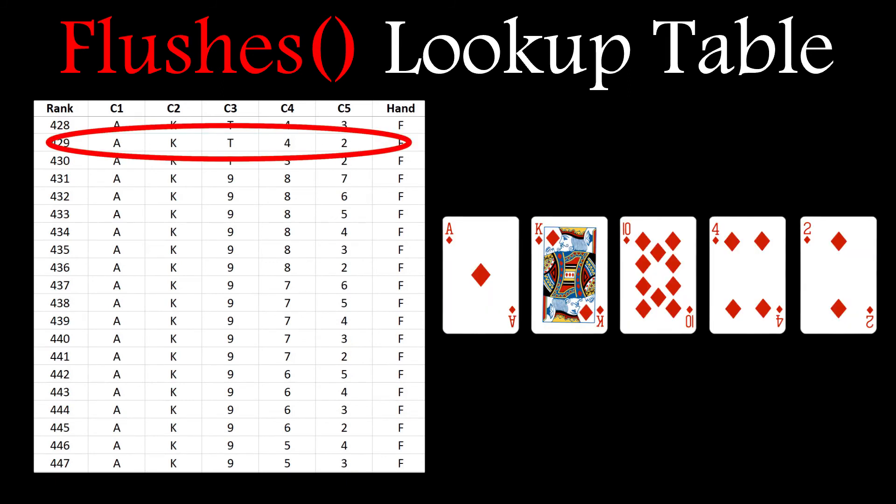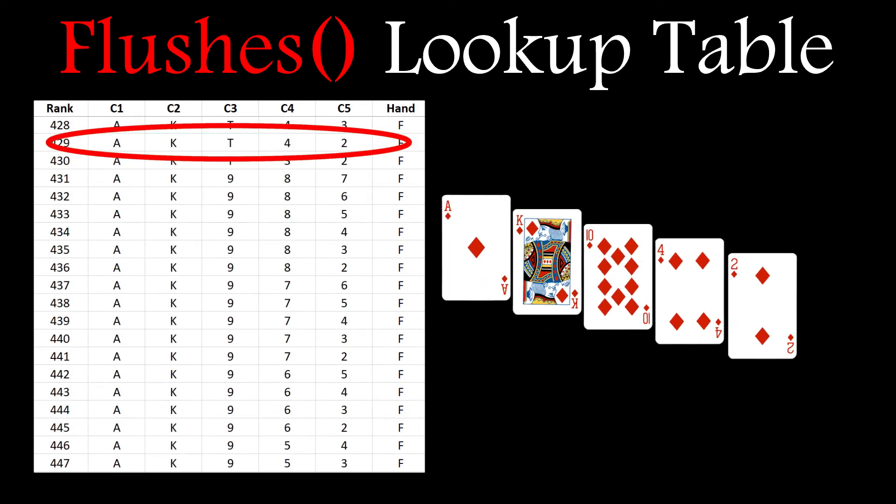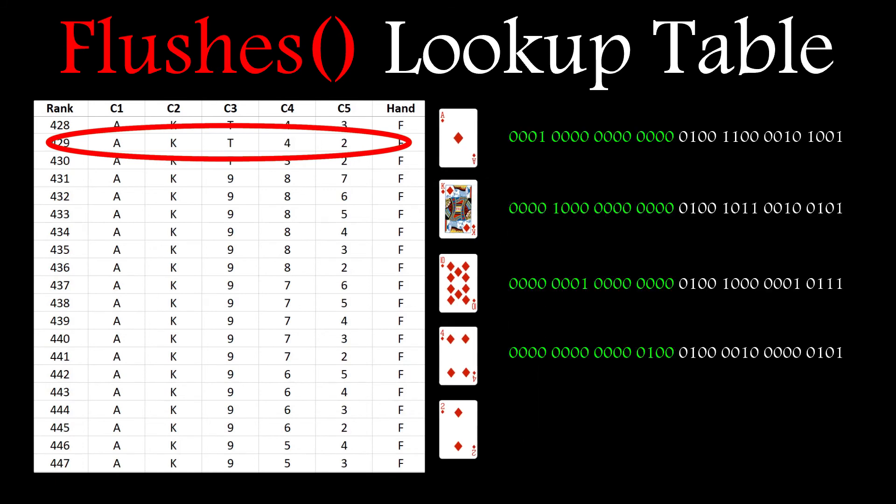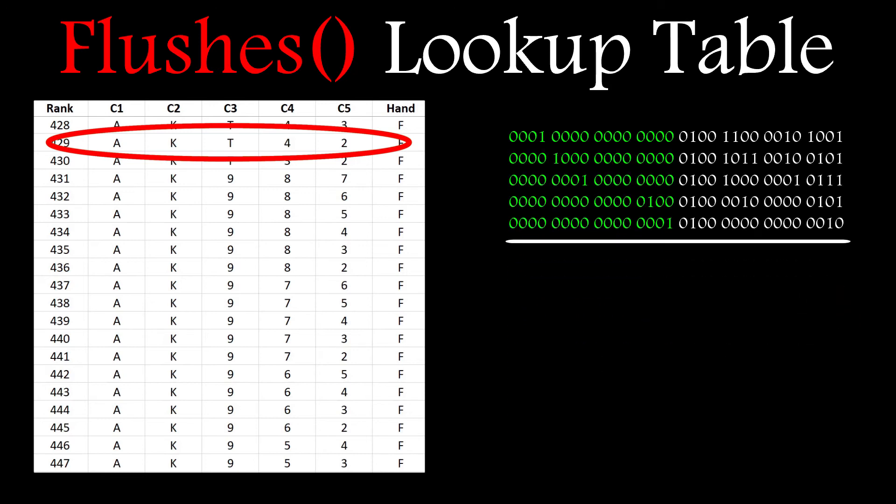For example if we take the hand shown we know it's a flush because there's an F against it in the hand column. I take the coded number for each card and it's the 16 last bits in green that I'm interested in. This section holds the card value information.